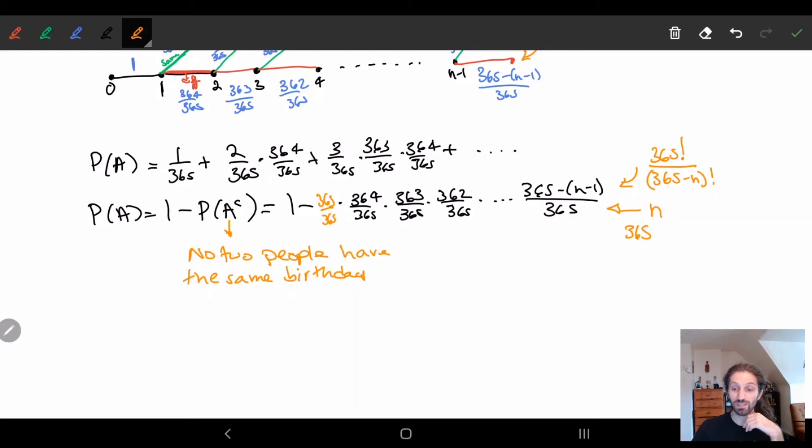So the probability of A is equal to 1 minus 365 factorial over (365 minus n) factorial times 365 to the n. Obviously you're not going to want to do this by hand, but it's easily writable, nice and simple, and we can plug these numbers into a calculator and get answers.